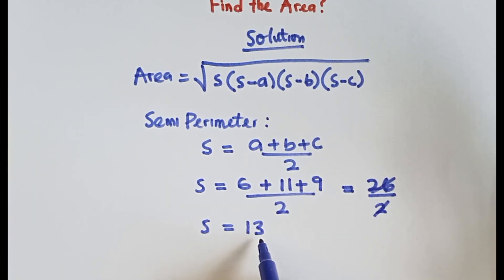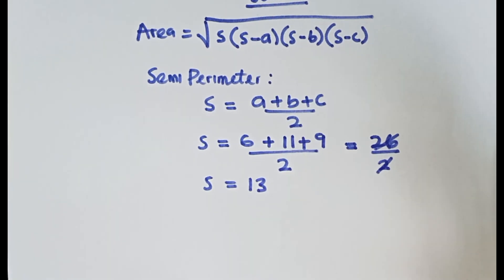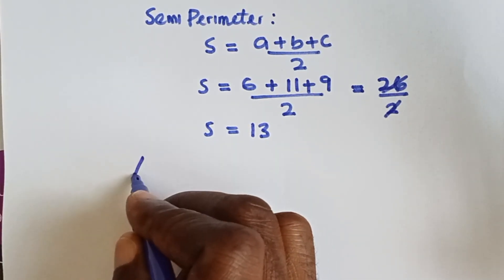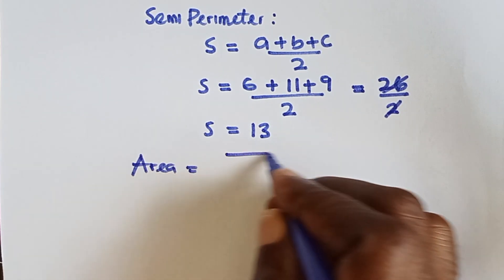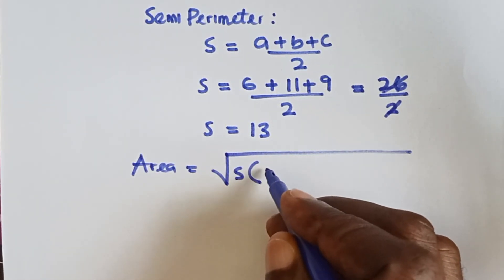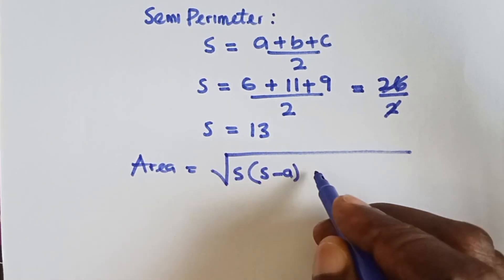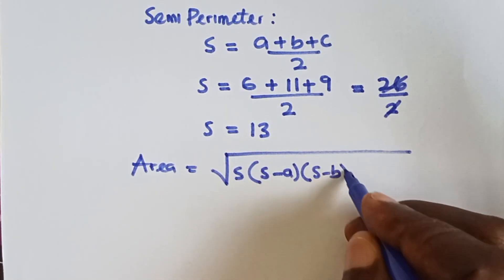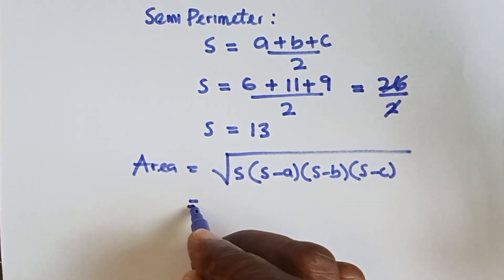Then we can use that in our formula. Remember that I said the area of that triangle is square root of s times (s minus a) times (s minus b) times (s minus c).